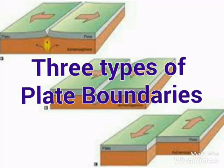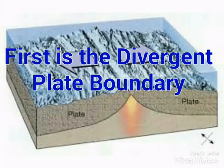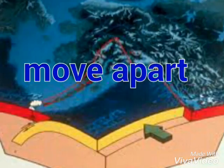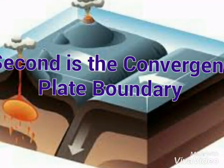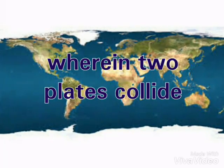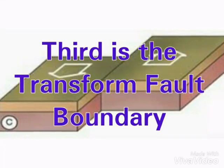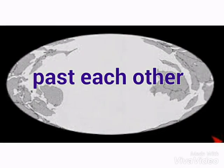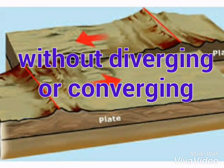Three types of plate boundaries. First is the Divergent Plate Boundary, where the plates move apart. Second is the Convergent Plate Boundary, where two plates collide. Third is the Transform Fault Boundary, where plates slide or grind past each other without diverging or converging.